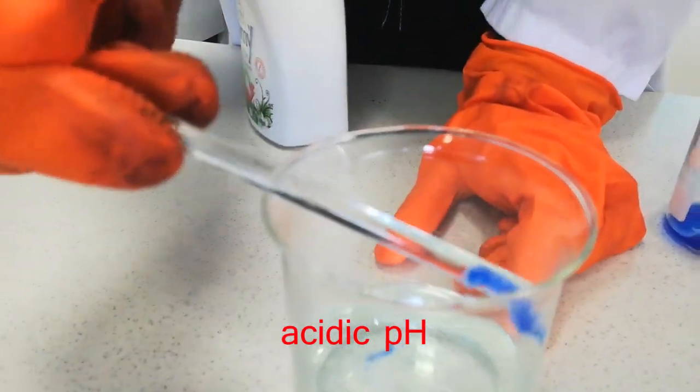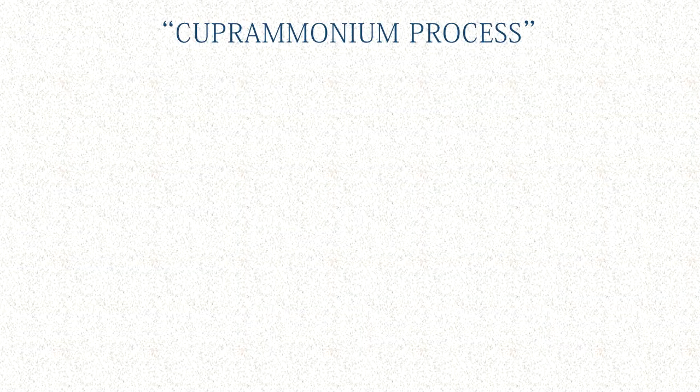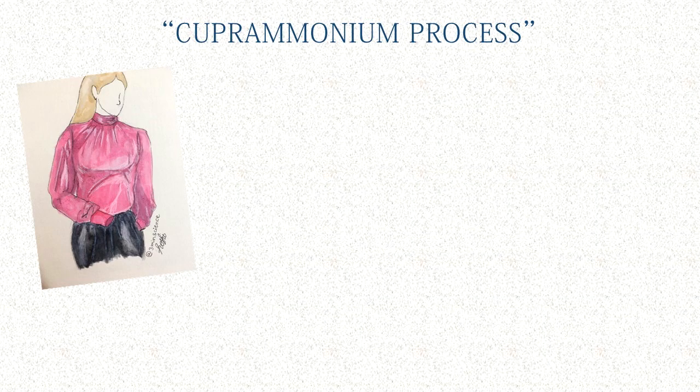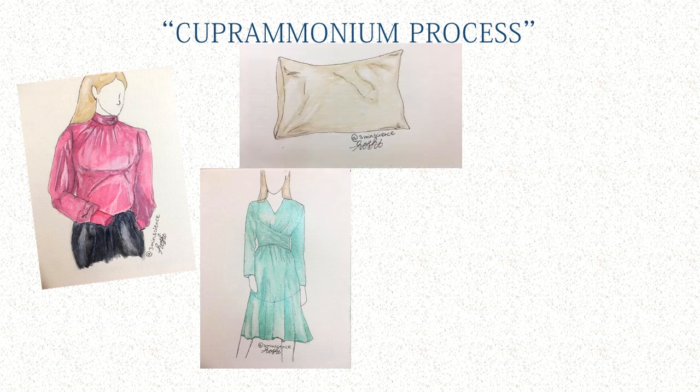Cuprammonium rayon is usually made in fine filaments that are used in blouses, lightweight summer dresses, and in combination with cotton for textured fabrics.